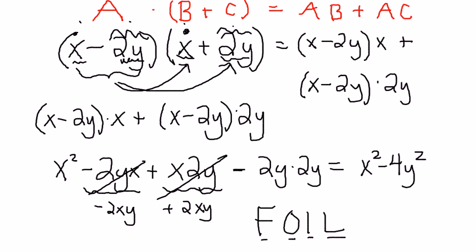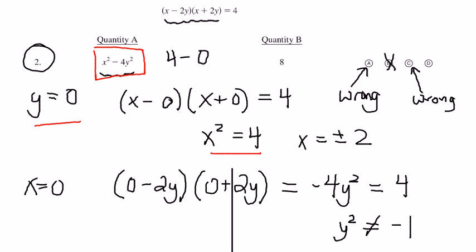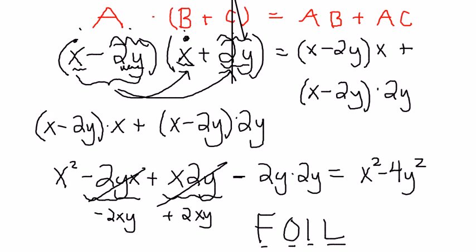Now, that was a long video and it was meandering, but remember that you always should try to plug in numbers. You can eliminate A, B, C or D from plugging in numbers. Something squared is always positive. And then here's this distributing business. Hope you learned something.